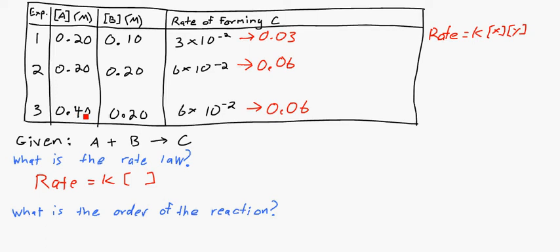Now in the third experiment, they doubled the amount of A, they left B the same. So they doubled the concentration of A and you can see that really didn't do anything. So that's telling us that the concentration of A doesn't even matter in this scenario here. But the concentration of B is really important. So really your rate law is just rate is equal to that constant K times concentration of B.